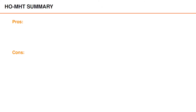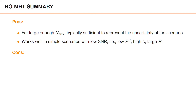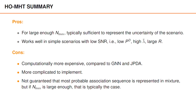We can summarize hypothesis-oriented MHT with some pros and cons. If the maximum number of hypotheses is chosen large enough, MHT is often sufficient to represent the uncertainty of the scenario. There is also a lot of empirical evidence that MHT works well when the signal-to-noise ratio is low — for example, with a low probability of detection, high clutter intensity, or large measurement noise variance. In scenarios where GNN and JPDA might fail, MHT often still works. Among the downsides, MHT is computationally more expensive than both GNN and JPDA, and more complicated to implement. Additionally, it is not guaranteed that the most probable association sequence at time k is represented in the MHT density, though if n_max is large enough this is typically the case.